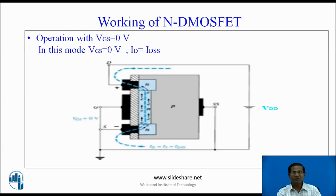Working of N-channel D-type MOSFET. Operation with VGS equal to 0: in this mode, VGS is 0V and ID is the maximum current IDSS. Short the gate to the source and apply a finite voltage between the drain and source. Because of 0V VGS, electrons start flowing from source to drain, so current starts flowing from drain to source. In this mode, current is maximum.